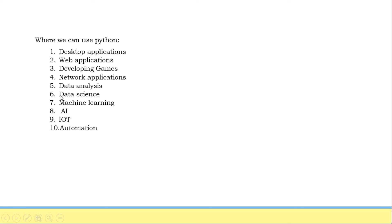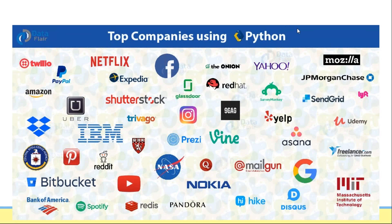Gaming industry, web applications — for all these things Python is very useful. If you take Instagram, most of it was developed in Python. Some portion of YouTube was developed in Python. Google uses Python. NASA is the biggest user of Python. This slide lists who all are using Python — all famous companies like YouTube, IBM, Amazon, any e-commerce site, Facebook, Netflix. Every company uses Python. NASA is not only the biggest user but also the biggest contributor to Python.